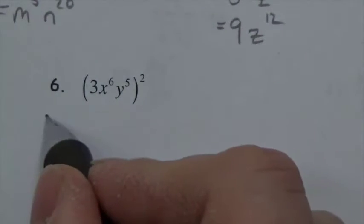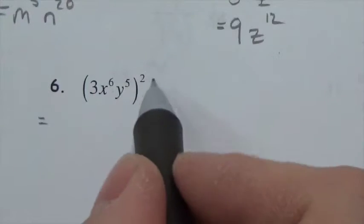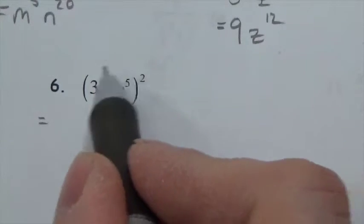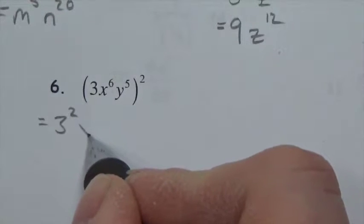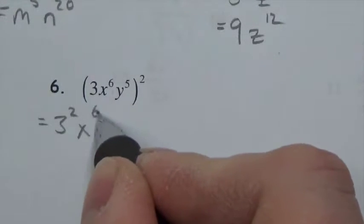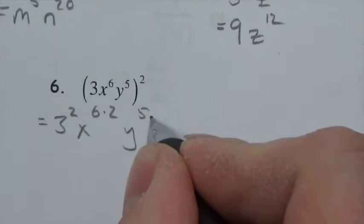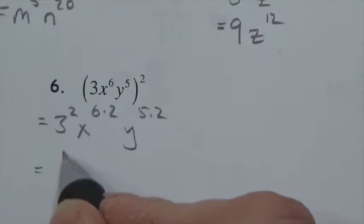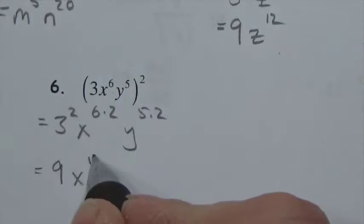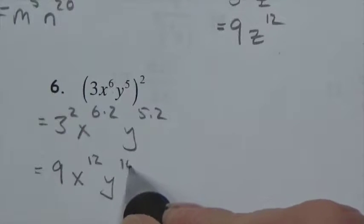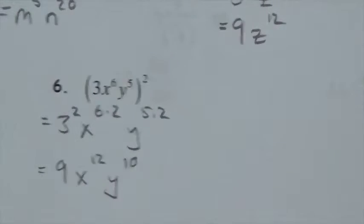For (3x to the sixth y to the fifth) squared: distribute the 2 to each exponent — 3 squared, x to the 6 times 2, y to the 5 times 2 — giving 9x to the twelfth y to the tenth.